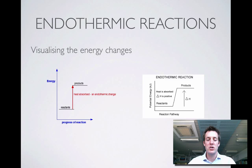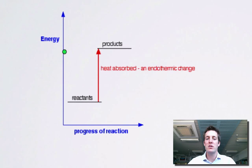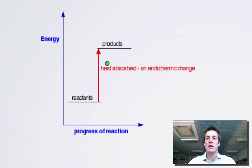If we visualize these energy changes on an energy level diagram, once again we start at the beginning of the reaction with reactants turning into products. The enthalpy of the system has gone up because heat was absorbed by the system and converted into chemical potential energy. That's what we mean by an endothermic change — heat is absorbed.